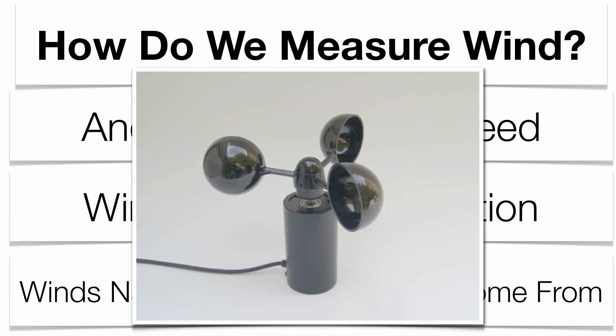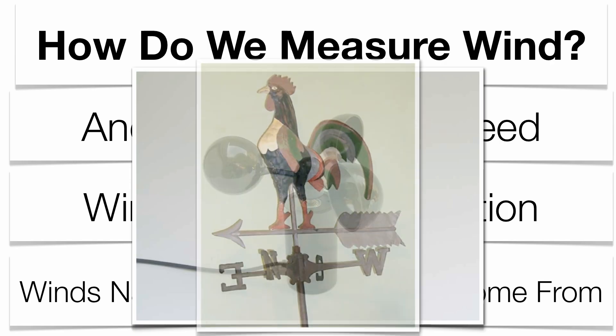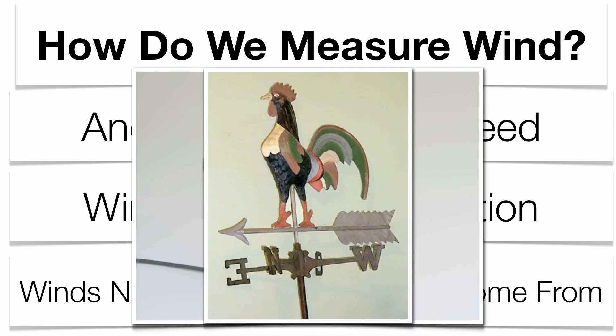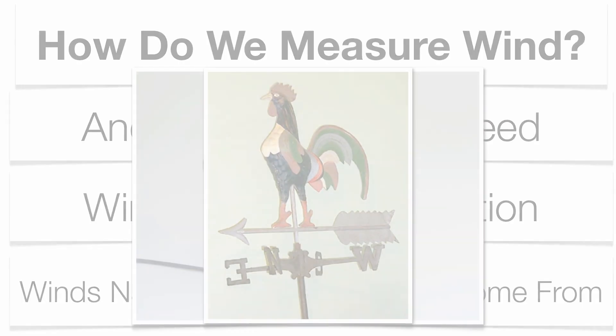An anemometer works by catching wind in its cups — that contraption spins around, and the faster it spins, the faster the wind speed. A wind vane tells you wind direction.